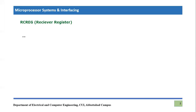For example, if we want to put the received value into file register 01, we have to use the instruction: MOVF receive register, 01. Whatever data is received and present in the receiver register, its copy will be sent to file register 01.